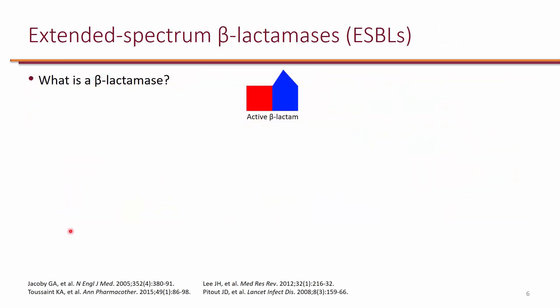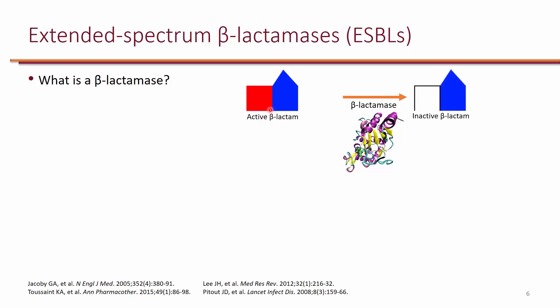What exactly is a beta-lactamase? The core component of a beta-lactam is a four-membered ring. Penicillins, cephalosporins, and carbapenems come with a double ring fused to the beta-lactam, with the exception of aztreonam. Some bacteria produce a protein called beta-lactamase, which hydrolyzes and opens the beta-lactam ring, rendering it inactive. This is how bacteria become resistant to beta-lactams.